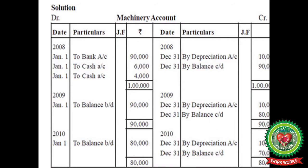Let's look at how a machinery account is prepared. Suppose you have purchased machinery worth Rs 90,000 — we pass it on the debit side of the ledger: to bank account Rs 90,000. Two expenses have been incurred: cartage, to cash account Rs 6,000, and installation, to cash account Rs 4,000. So the total cost of the machinery comes out to Rs 1 lakh. The rate of depreciation is 10% under the straight line method, also called the fixed installment method. Every year the same value of depreciation is charged — 1 lakh into 10% is Rs 10,000.